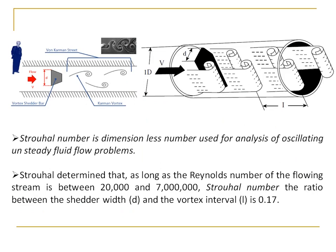The width of the bluff body is D, and L is the distance — the interval between the vortices — on one side of the bluff body. The Strouhal number is a dimensionless number used for the analysis of oscillating unsteady fluid flow problems, and since we have an oscillating flow in the vortex flow meter, the Strouhal number comes into play.